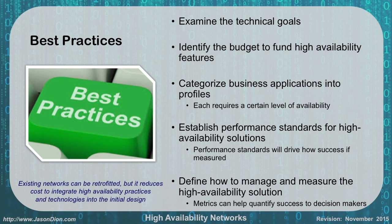You have to decide in your business what needs the highest availability. Also, establish performance standards for your high availability solutions — if you don't have a standard, you can't measure success. We use 99.999% overall availability, but maybe a particular workstation only needs 90% uptime. Define how you're going to manage and measure your availability solution, since metrics help decision makers determine where more investment is needed. Existing networks can be retrofitted, but it costs more than doing it all up front in the initial design.